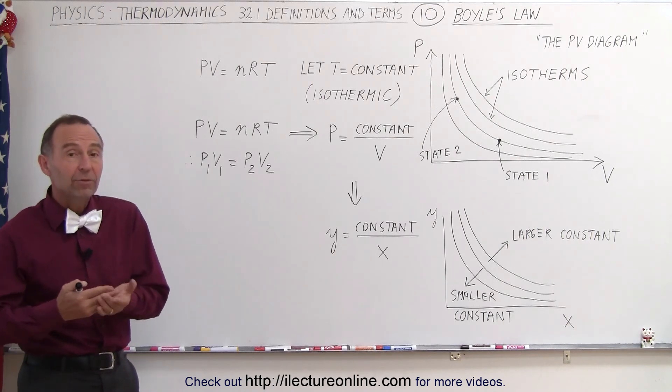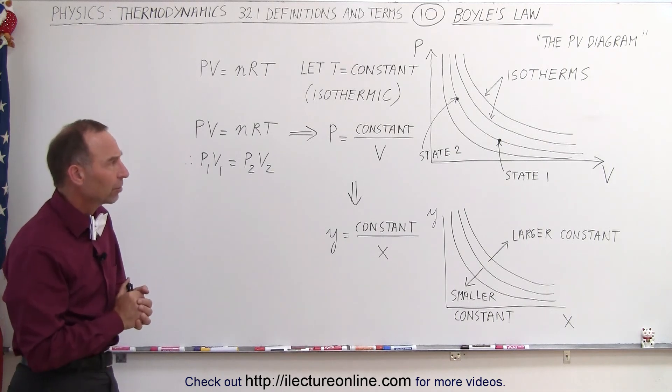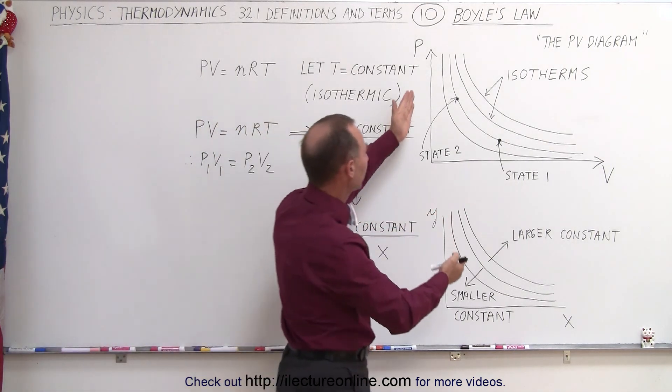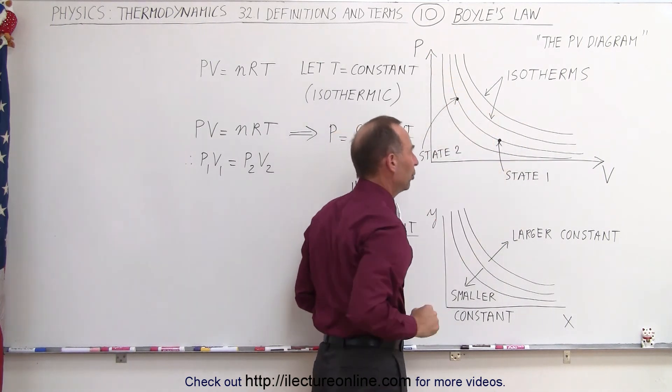Well, the PV diagram is a diagram that has pressure on the vertical axis and volume on the horizontal axis. Here we have a diagram with pressure and volume, and then we have these curved lines on here which are called isotherms.